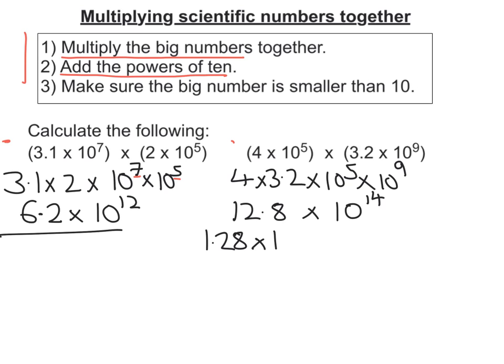And all I've done is move the decimal place once. So it's times 10 to the 1 times 10 to the 14. So combine those two 10s together. Remember I add the powers. I'm going to get 1.28 times 10 to the 15. And there's my answer.